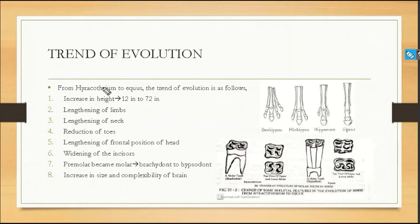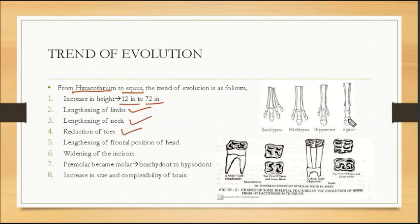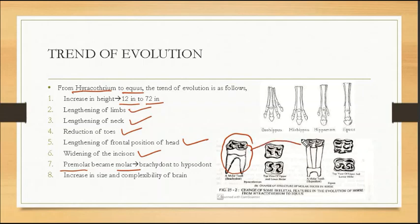The trend of evolution from the phylogenetic laboratory shows: increase in height up to 72 inches, lengthening of limbs, the neck is taller, the toes reduce to a single toe, lengthening of the frontal portion of the head, widening of the incisors, and the premolar teeth become molariform — brachyodont to hypsodont.